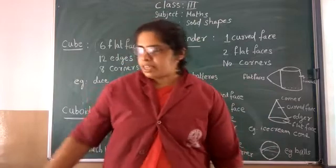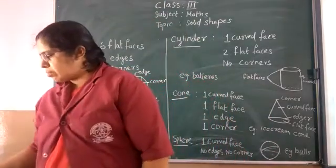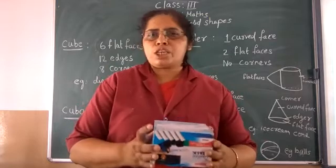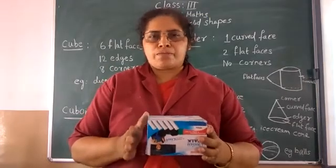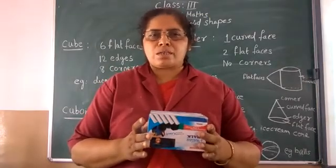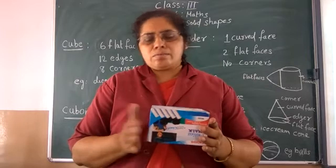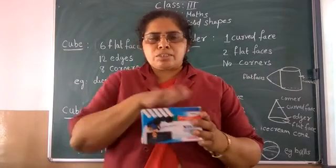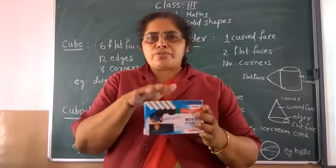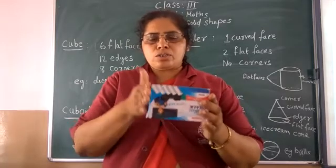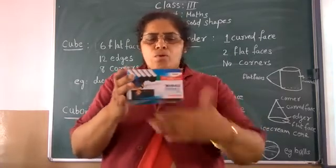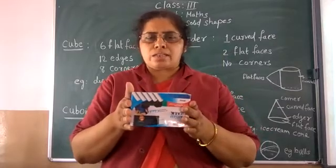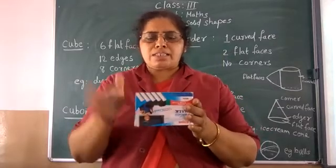First, let's take the example of a cube. See, this is the chalk box. In a cube we have faces, edges, and corners. What are the faces? These are the faces. Let me count: 1, 2, 3, 4, 5, and 6. There are 6 faces.